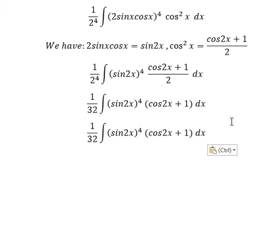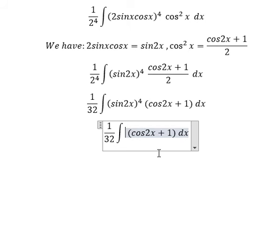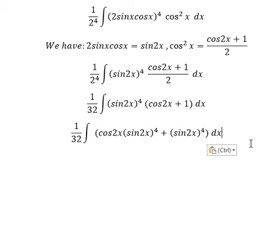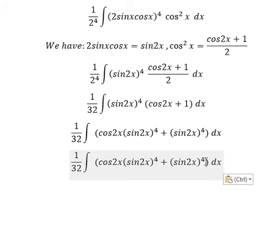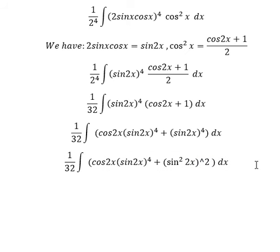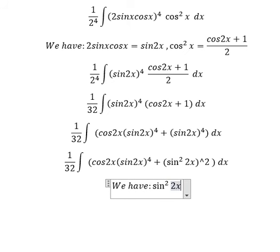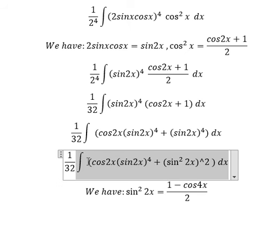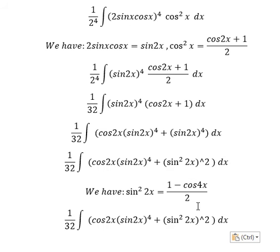Next, cosine x to the power of 4 multiplied by cosine x, and number 1. About cosine x to the power of 4, we can write it as cosine x squared, everything to the power of 2. Next, we have the formula here. That is the power of sine x squared, equals 1 minus cosine 4x, over 2.